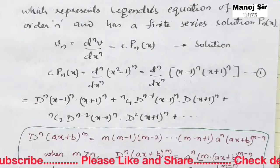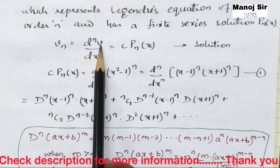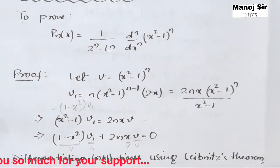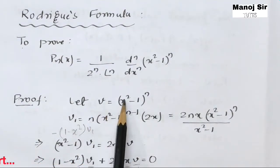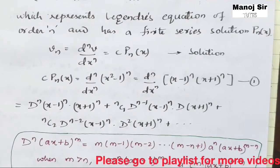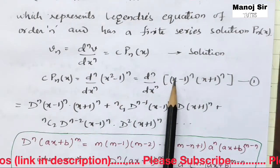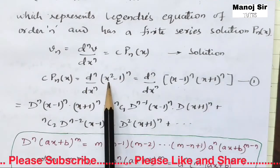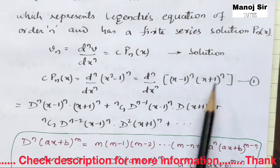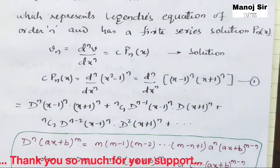Now we are interested in finding the value of C. We have C·Pn(x) = the n-th derivative of V with respect to x, where V = (x²−1)^n. We can write x²−1 = (x−1)(x+1), so V = (x−1)^n·(x+1)^n.